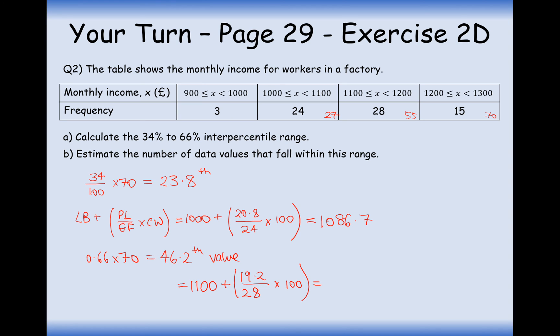Out of 28 data values times by the class width of 100. So in this case here, we're going to do 19.2. 19.2 divided by 28 times by 100. Add on to 1,100. And we get 1,168.57. So we'll call it 0.6.